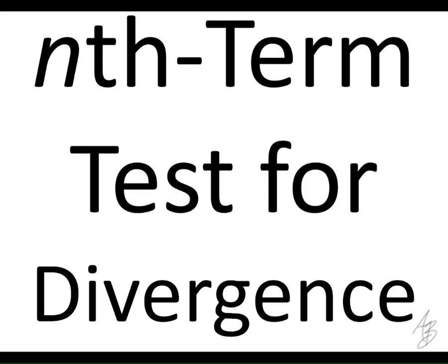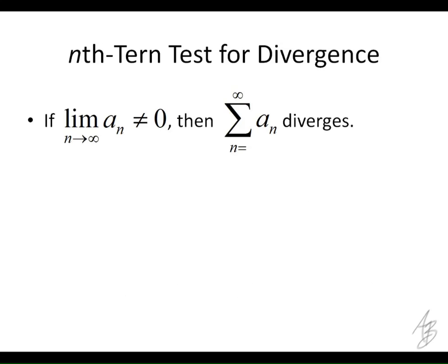The first way we're going to test for convergence or divergence is the divergence test. If a series fails this test, it doesn't necessarily mean it converges — we simply don't know. The nth term test says this, and we've seen it before. It's the contrapositive of a theorem from a couple of sections ago: if the limit of the terms in the series is not equal to 0, then the series diverges.